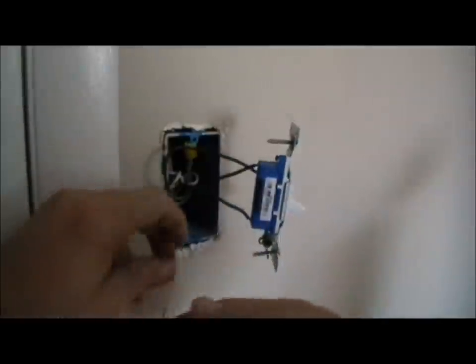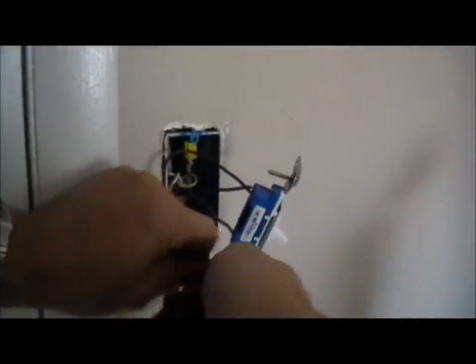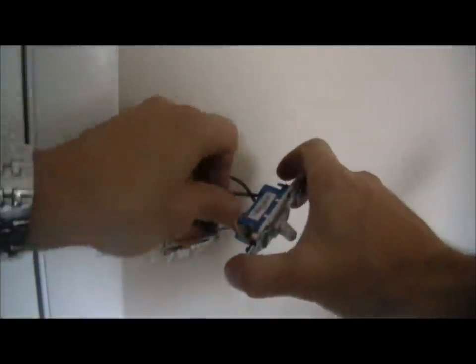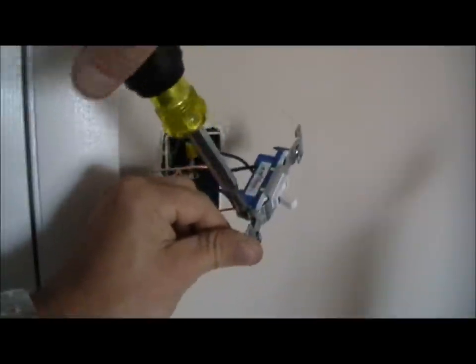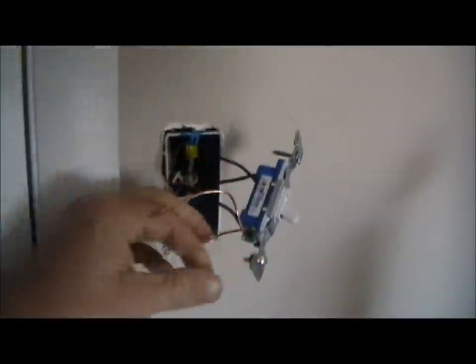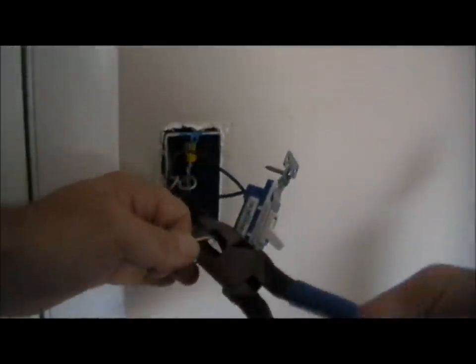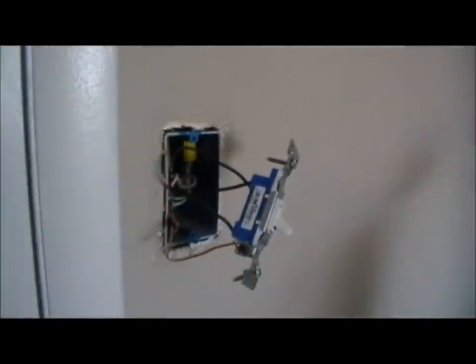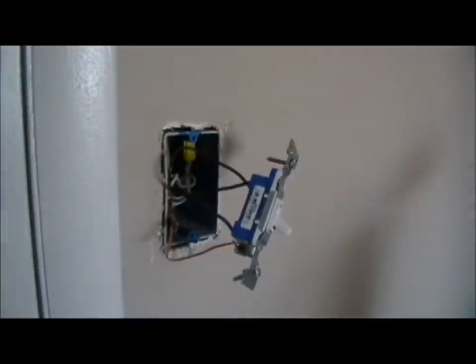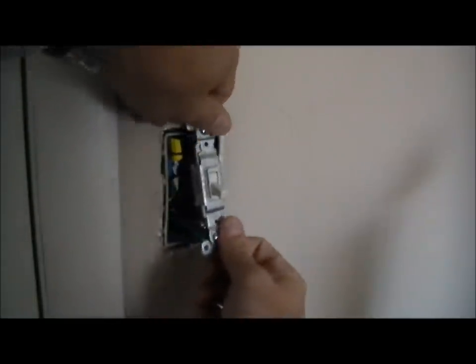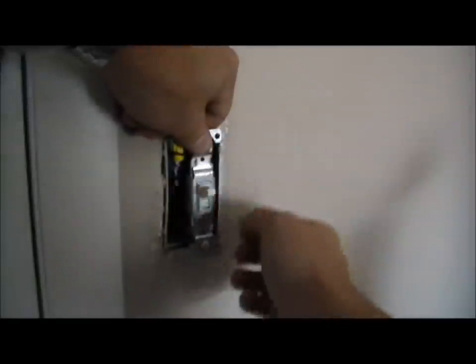Then all we have left is to put the ground back on. Just twist around like that. Tight there. Cut off the excess. And here we go. We can put this box back in here. Turn it in. Make sure it's facing the right direction. Light still works.